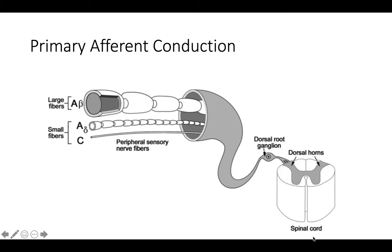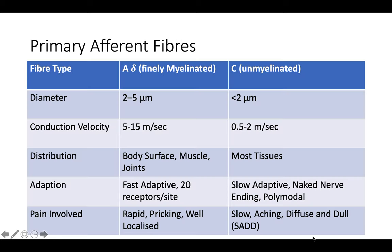Primary afferent conduction occurs through A-delta, C fibers, and A-beta fibers. The A-delta and C fibers are the main primary afferent fibers, conducting at 0.5 to 15 meters per second. C fibers are slow-adaptive, conducting slow, aching, diffuse, and dull pain — what I call 'sad pain': slow, aching, diffuse. A-delta fibers are fast-adaptive and conduct rapid, pricking, well-localized pain.